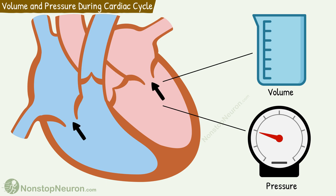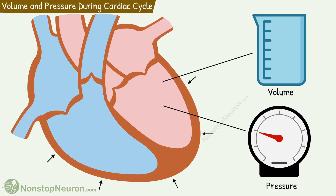Then the atrioventricular valves close and isovolumetric contraction begins. During this, there is no flow of blood, so there is no change in volume. However, the forceful contraction of ventricular muscles causes a sharp rise in pressure.